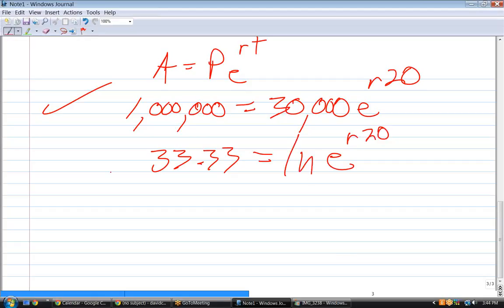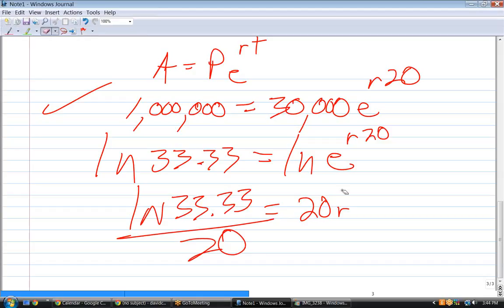So, this divides by this into 33.33. Now, take the natural log of both sides, bring down the R times 20, or 20R. The natural log of E is 1, so R is 0.175.